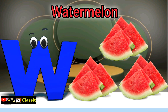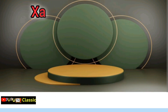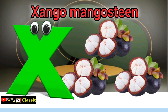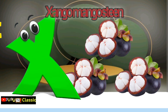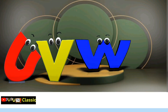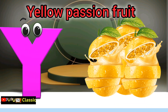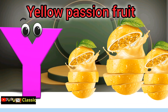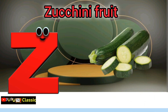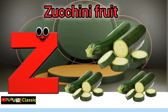W is for watermelon, w-w-w-watermelon. X is for xango mangosteen, x-x-xango mangosteen. Y is for yellow passion fruit, yeah yeah yellow passion fruit. Z is for zucchini fruit, z-z-zucchini fruit.